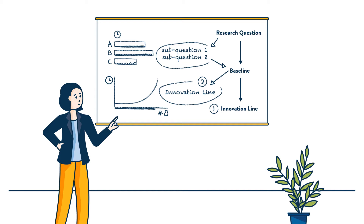The original question was: can more detailed information increase the efficiency of evacuation in case of a flood? The answer could be yes or no, but still you don't know more about the solution. So you decide to reformulate: how can more detailed information, in the form of a model and/or a visualization of the flood, increase the efficiency of evacuation in case of a flood? The word efficiency has to be elaborated, leading to two research questions. Research Question 1: will the evacuation be sooner and faster when decision-making is based on more detailed information? Research Question 2: will the impact on people, infrastructure, and environment be minimized when decision-making is based on more detailed information?